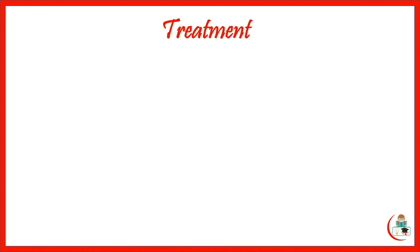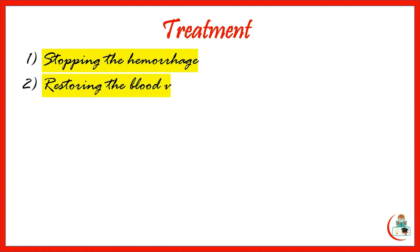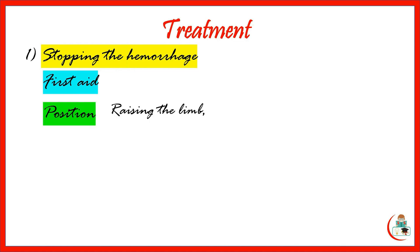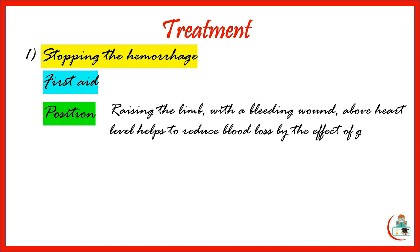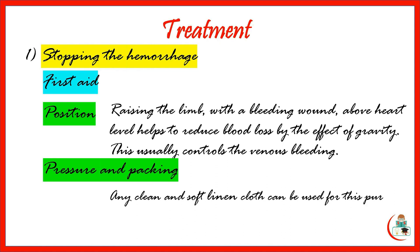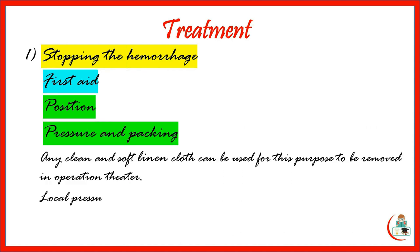The treatment of hemorrhage comprises two main issues: number one, stopping the hemorrhage, and number two, restoring the blood volume. Regarding measures to stop bleeding — first aid includes positioning: raising the limb with a bleeding wound above the heart level helps reduce blood loss by the effect of gravity, and usually controls venous bleeding. Pressure and packing: any clean soft cloth or dressing can be used to apply pressure to a bleeding wound. Local pressure is effective in controlling venous or capillary bleeding.